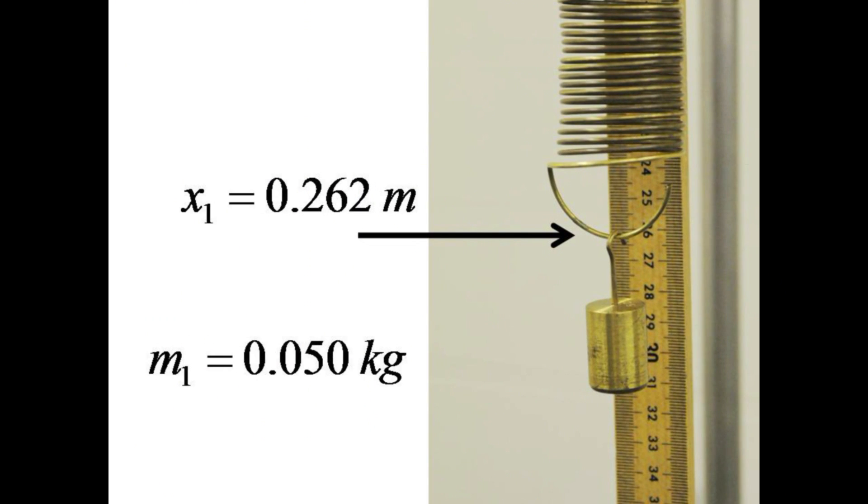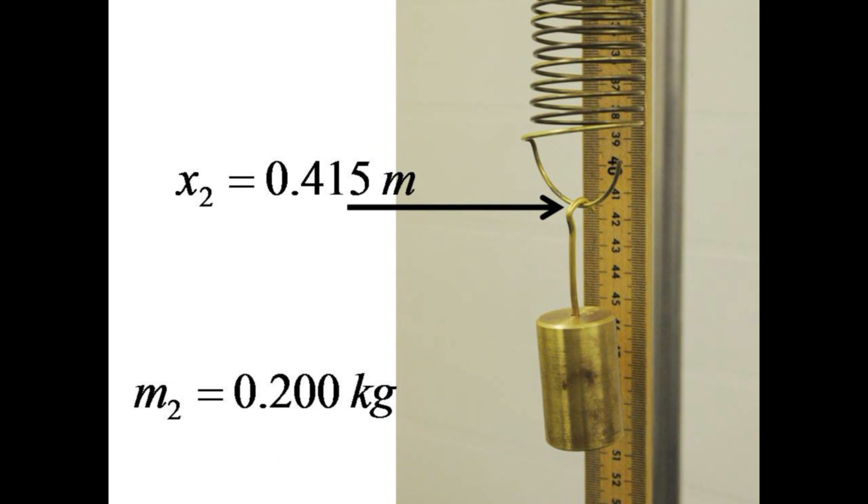To measure k, hang 50 grams and note the initial position of the end of the spring. Then hang 200 grams instead and measure the new position of the end of the spring.